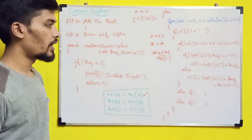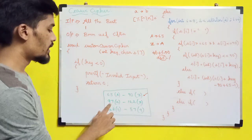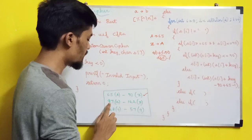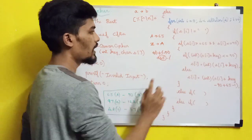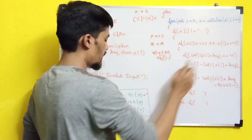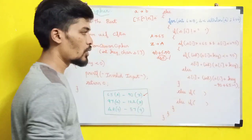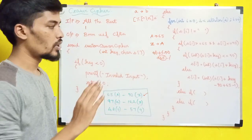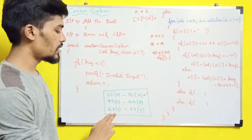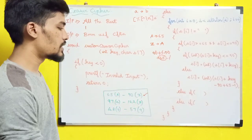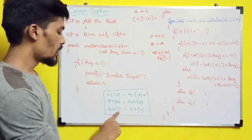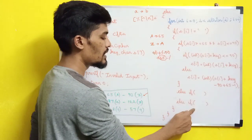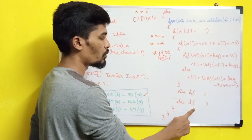If you use lowercase letters, in place of 65 you use 97, and in place of 90 you use 122. If you use digits, you use 48 and 57. So for the else-if condition, same steps apply — substitute 97 and 122 for lower case, and 48 and 57 for digits.